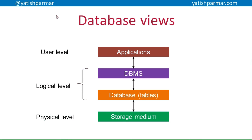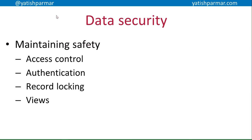Another thing to consider when talking about transactions is database security. Recalling the diagram of the levels of a database — the physical level, logical level, and user/applications level — where users have different views of the data to carry out their job. Data security needs to be maintained to enable transaction processing to take place safely. Methods include access control, authentication of the user, locking records so they can't be modified by two users at the same time, and views.